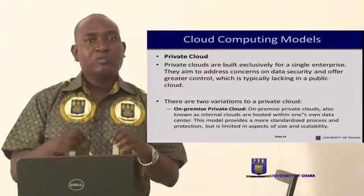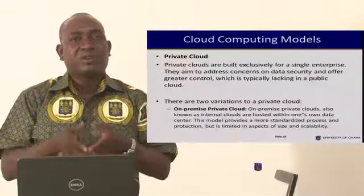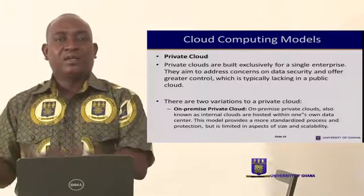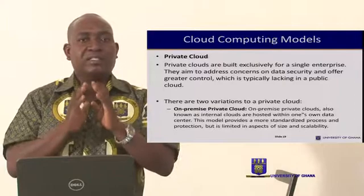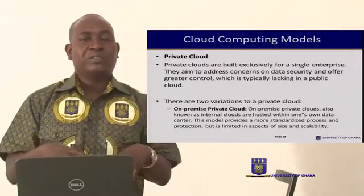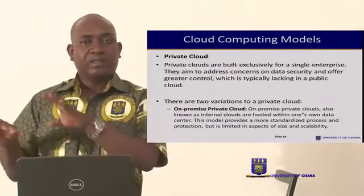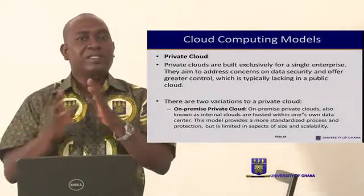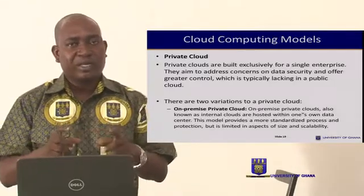With private clouds, we have two main types: the on-premise private cloud and the externally hosted private cloud. The on-premise type is mounted in the premises of that organization, and the externally hosted type is hosted at a different location but is for just that organization. So you can have it hosted in your own premises, or you can have it hosted in another premises by a third party — but it is just for the organization.